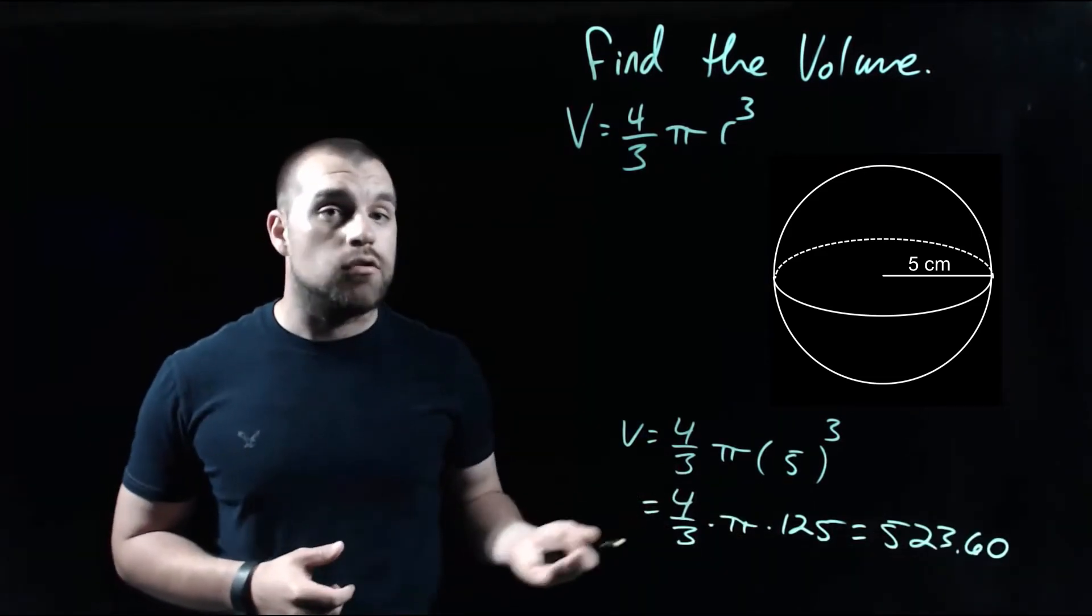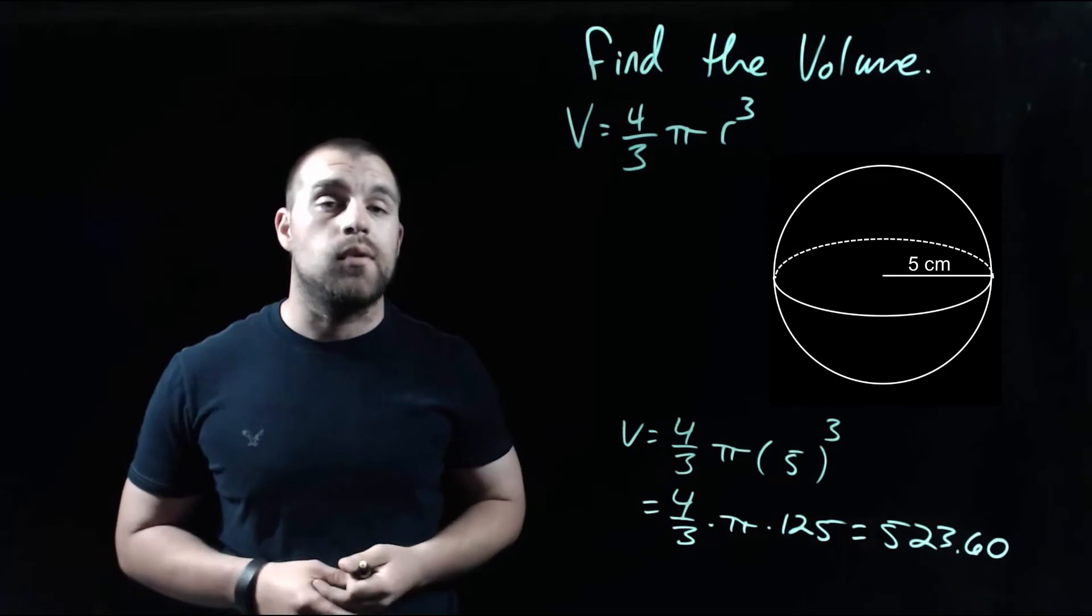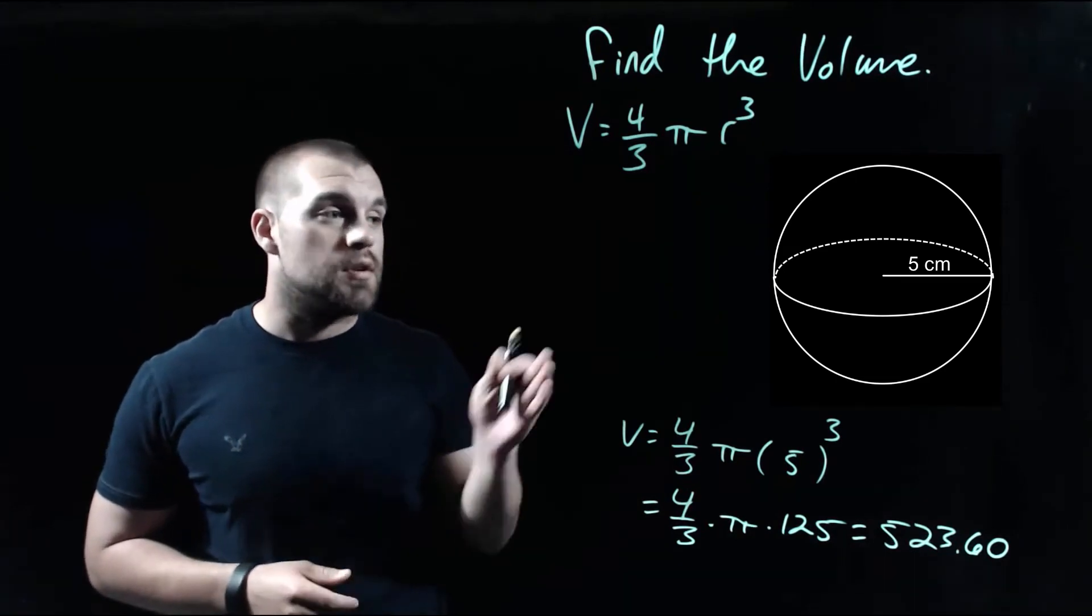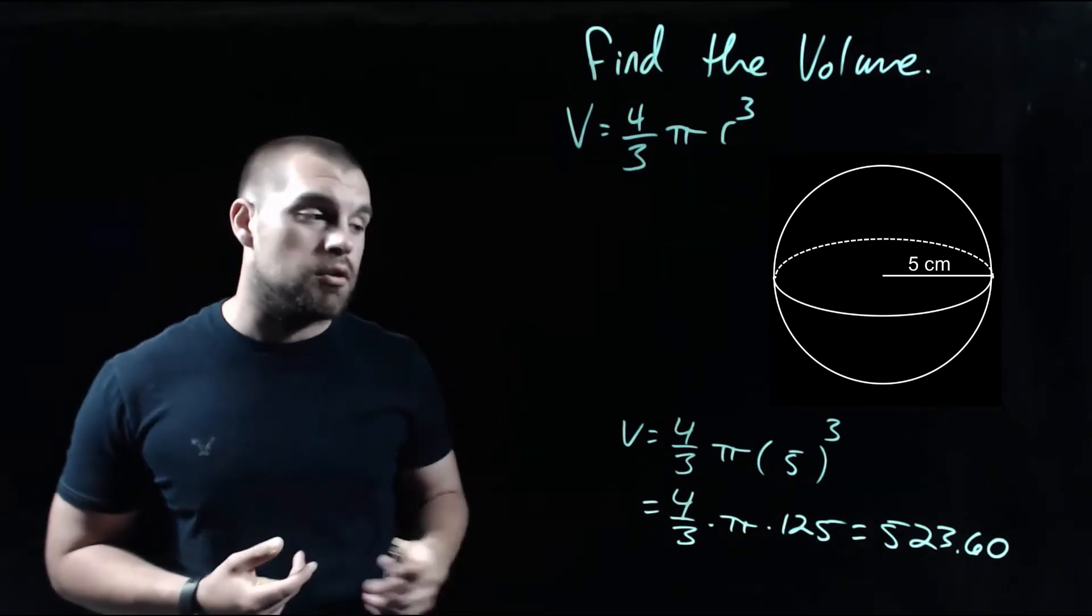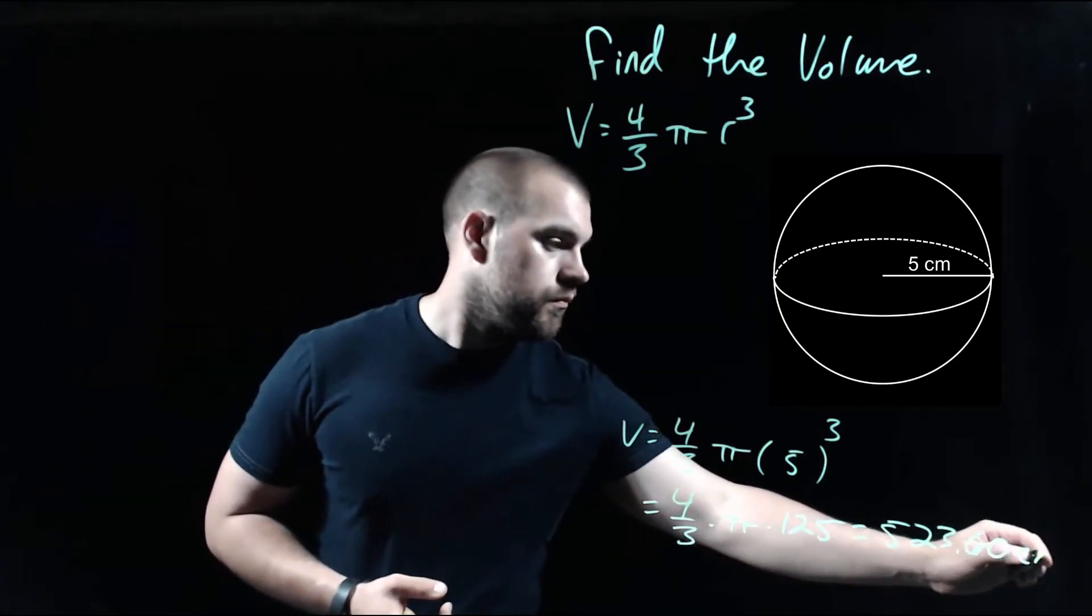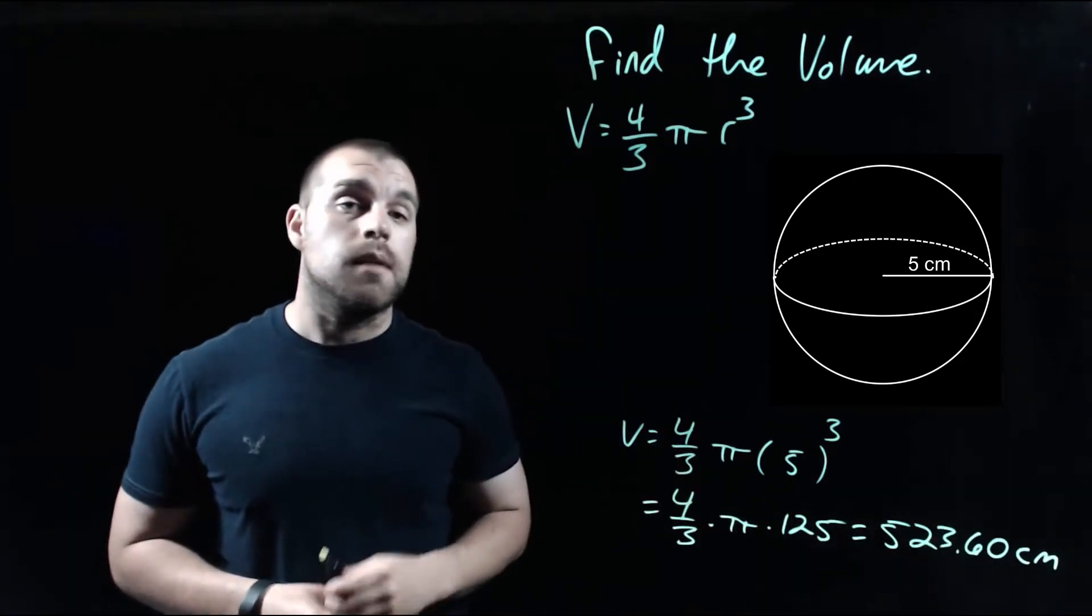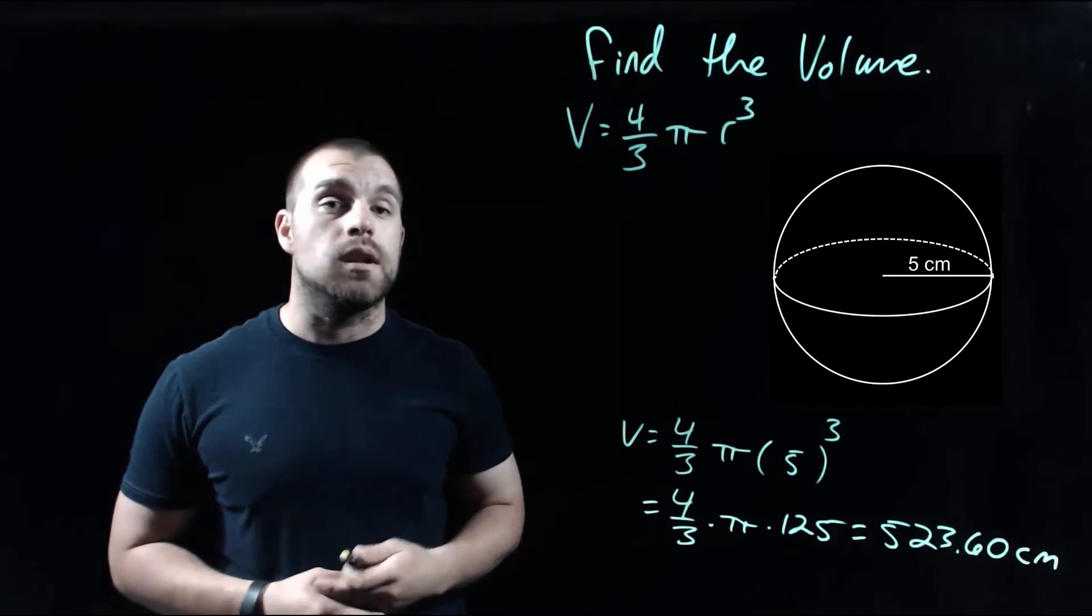When we do that, we get 523.60 if we round to two decimal places. We should throw a label on this. Our measurements were given to us in centimeters. So we're going to put centimeters on the end, but this is a volume, so it has to be centimeters cubed.